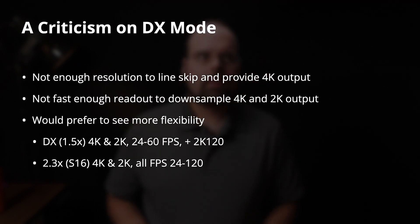Ultimately, if I call it a criticism: I would have just liked more flexibility. I like options. Having the ability to shoot 4K and 2K at 24 to 60fps at the 1.5x DX crop, then a 2K 120fps option at the 1.5x crop — which there is enough resolution to support with line skipping — coupled with a 2.3x crop option where you could shoot 4K and 2K at all frame rates from 24 to 120fps, just seems like it would give more options. I like options in cameras.